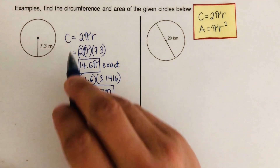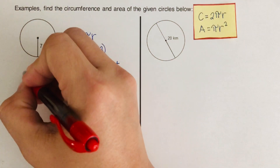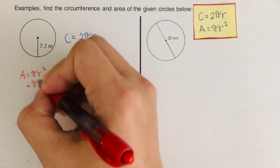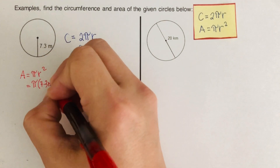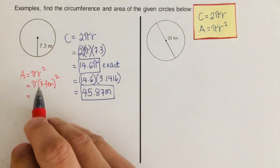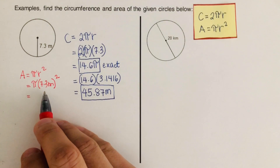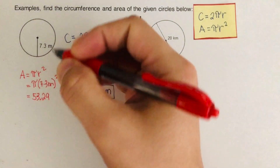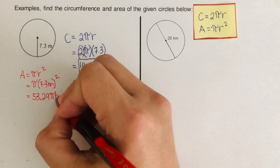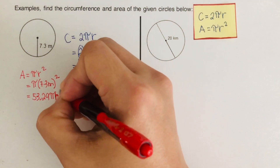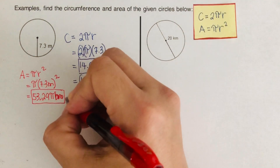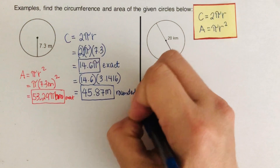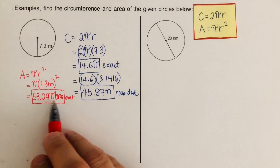Now to find the area — I'll use a different color. The formula is A = πr². So we have π times 7.3 meters squared. 7.3 squared means 7.3 times 7.3, which equals 53.29. So the exact value for the area is 53.29π meters.